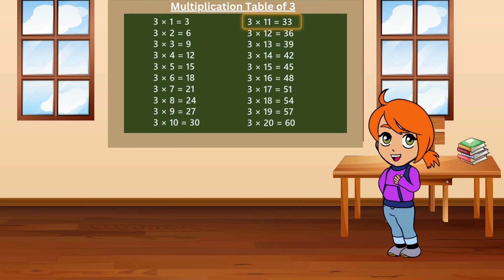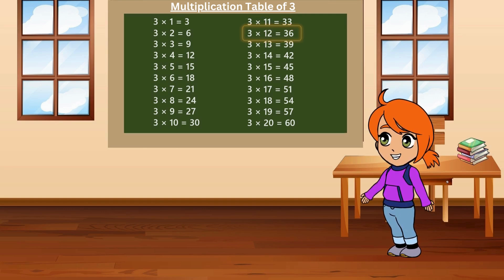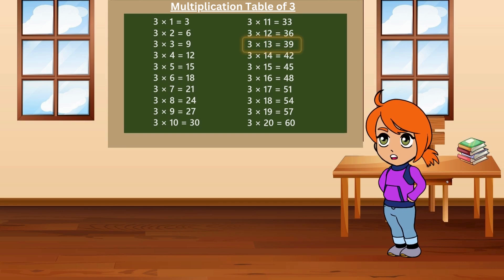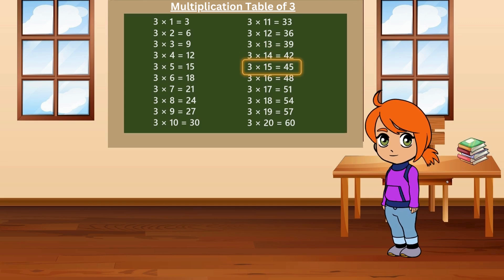Three elevens are thirty-three. Three twelves are thirty-six. Three thirteens are thirty-nine. Three fourteens are forty-two. Three fifteens are forty-five.